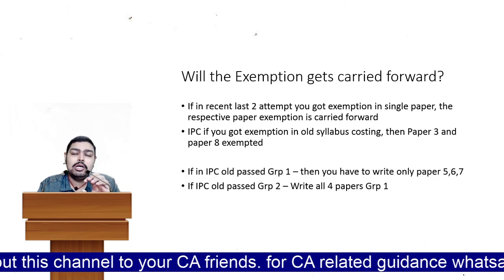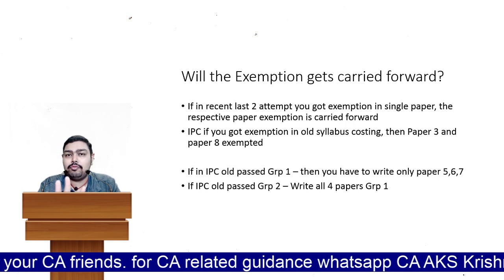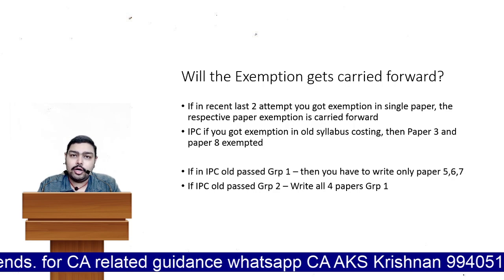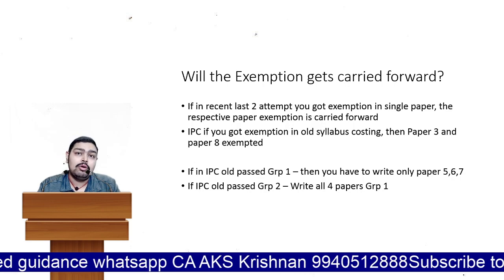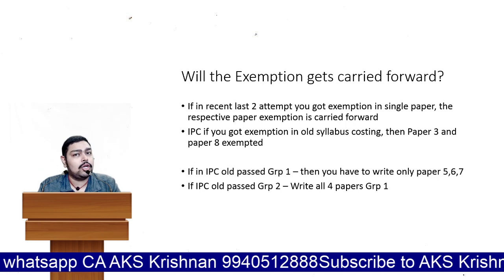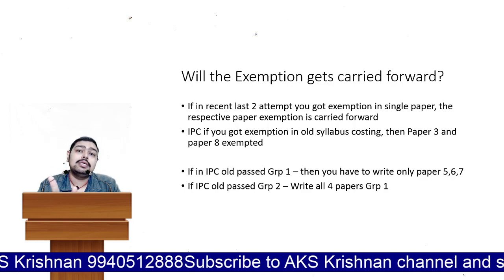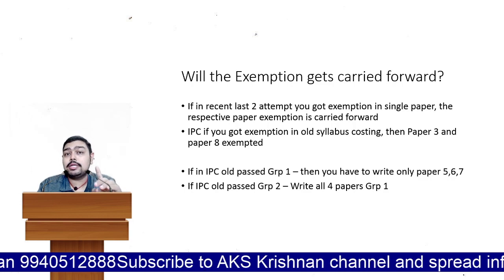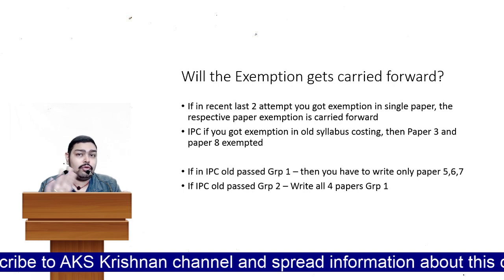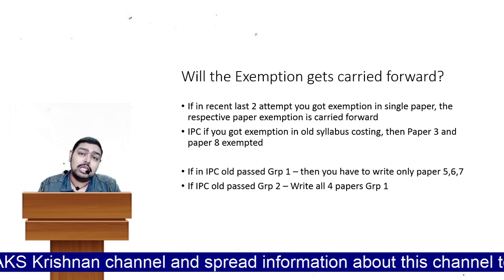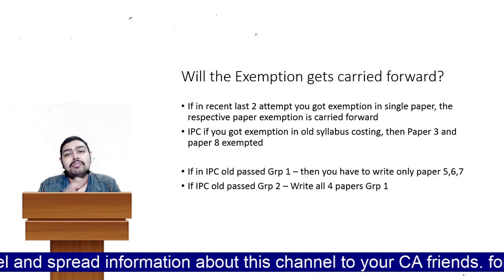If in the old syllabus you passed Group 1 of IPCC in full, then in Group 2 you have to write only three subjects — not four. Those three subjects are: Advanced Accounts, Auditing, and EASM. FM Economics is exempted for you. For CA Final: if you passed Group 1 in full, you have to write Group 2. If you passed Group 2 in full, you have to write Group 1. For Inter, if you passed Group 2 in full, you have to write all four subjects in Group 1.